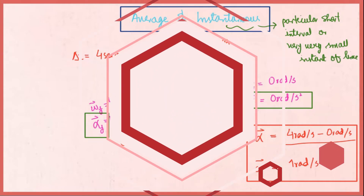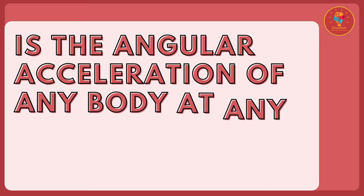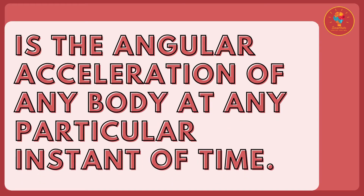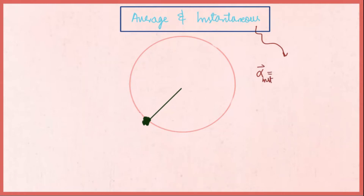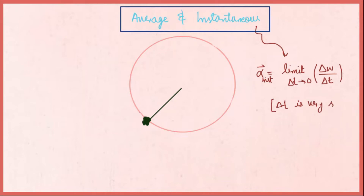Instantaneous angular acceleration is the angular acceleration of a body at any particular instant of time. Mathematically, it equals the limit of delta omega over delta t as delta t approaches zero — meaning the time interval is very small, almost zero but not exactly zero. This is the concept of a limit.